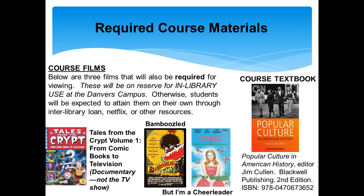So some of the required materials for this course. First, on the right there, is the course textbook, which is Popular Culture in American History. This is the second edition, and you'll want to make sure that you have the second edition, because the first edition has different chapters and different articles entirely. So make sure you have the second edition — it has that cover. It's by Jim Cullen and it's from Blackwell Publishing.